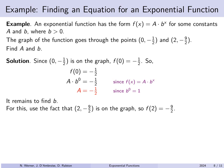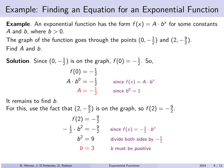Dividing both sides by negative 1 half gives b squared equals 9. There are two real numbers whose square is 9, but b must be positive, so b equals 3, not negative 3. We have solved for a and b: f of x equals negative 1 half times 3 to the x.